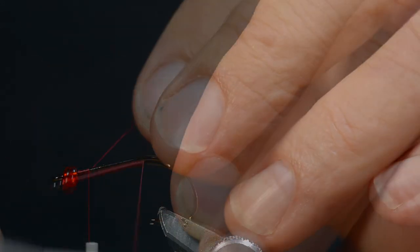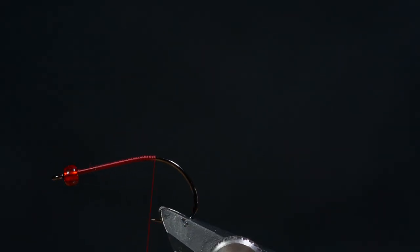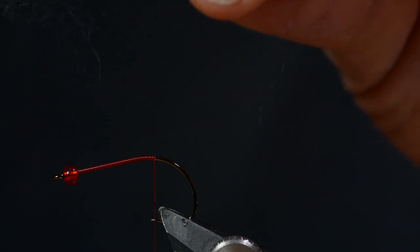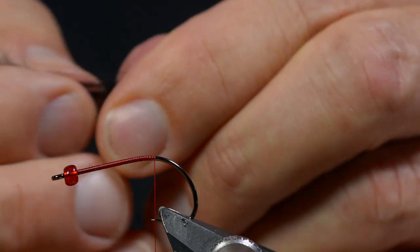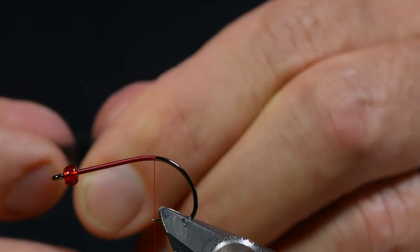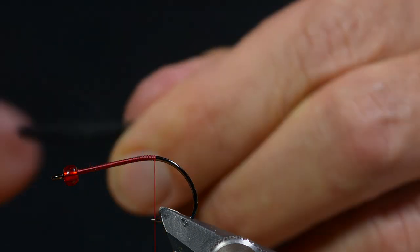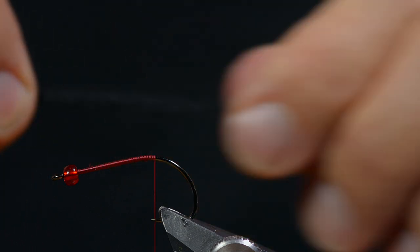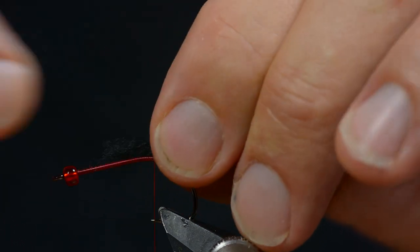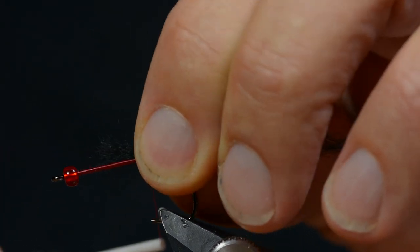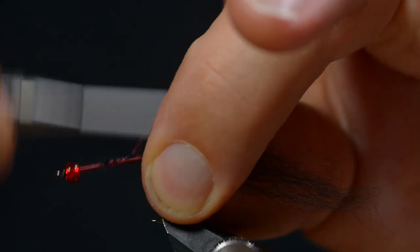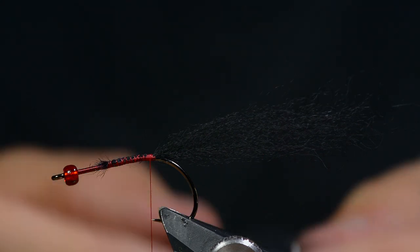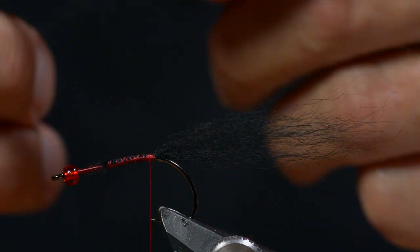I start the tying by adding a small maroon colored glass bead to the Eric Slide Stinger hook. This is Arctic Fox and it's black like my t-shirt. I know that isn't the best solution for this instruction.